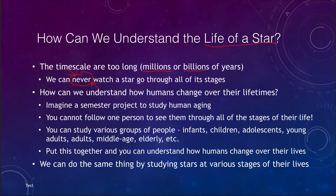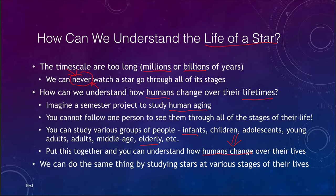One way to understand stars, even though we can't watch an individual star go through its life, is to think about how we might understand how humans change over their lifetimes. Imagine a semester project to study human aging. In a semester, you cannot follow one person through all the stages of life, but you can study all different stages — infants, children, adolescents, young adults, adults, middle age, elderly — and still understand how humans change over a lifetime.